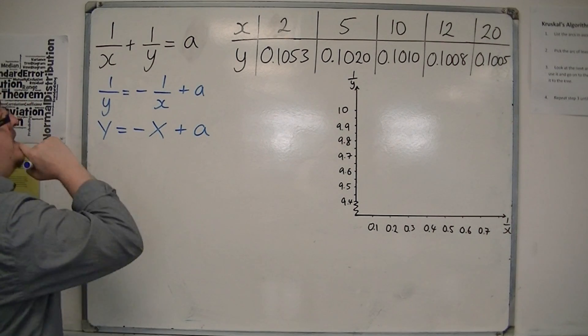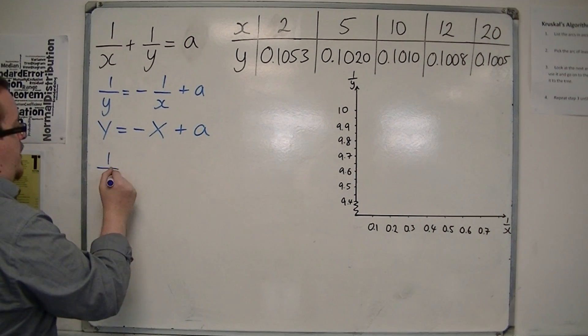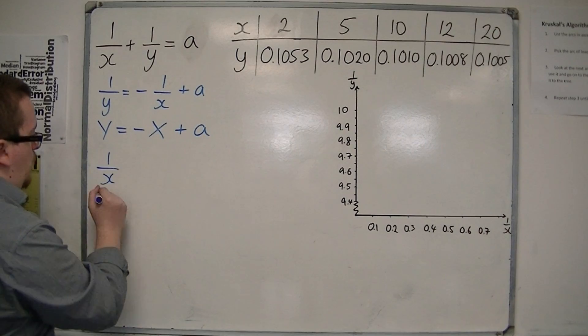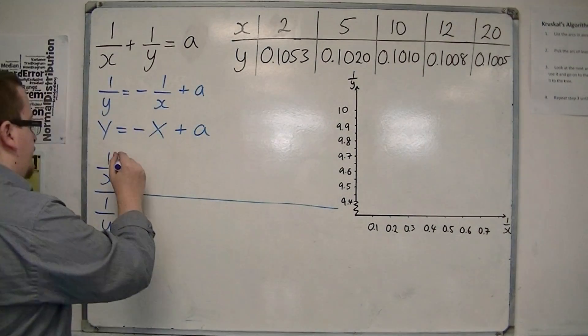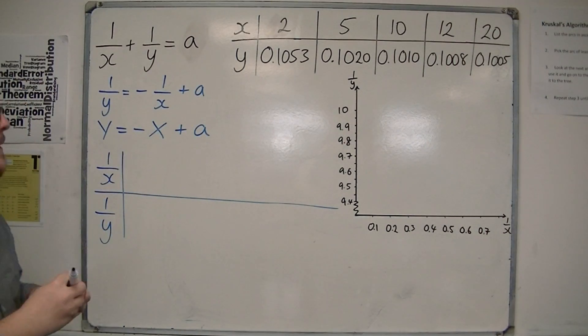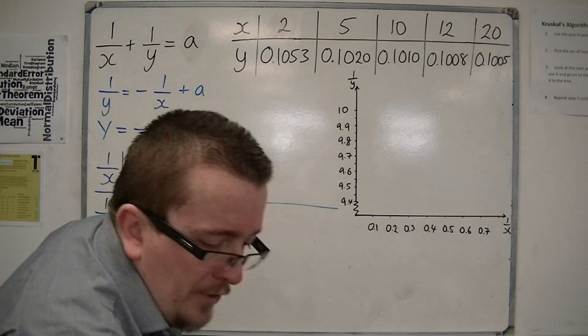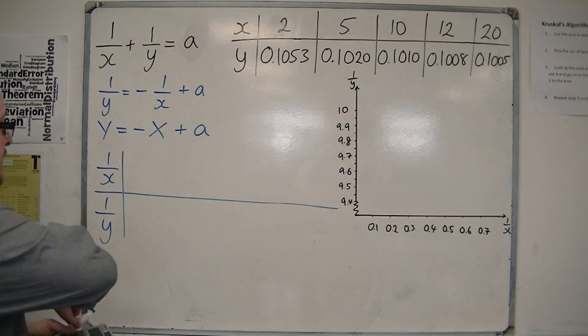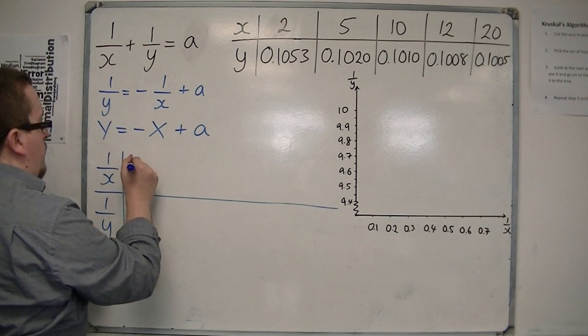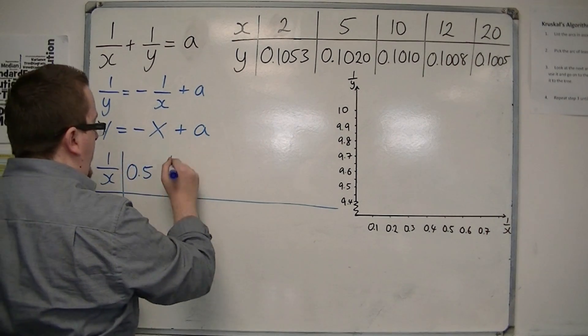So what I do is I'm going to build up a table of values, 1 over x and 1 over y. So I'm going to start off by doing my 1 over x's, so I'm going to have 1 over 2, so I have 0.5. I'm going to go into decimals here.